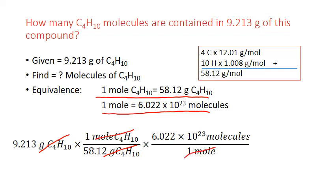We multiply through by everything on top. We divide by everything on bottom. So 9.213 grams divided by 58.12 grams times 6.022 times 10 to the 23rd molecules gives us 9.54589 times 10 to the 22nd molecules.